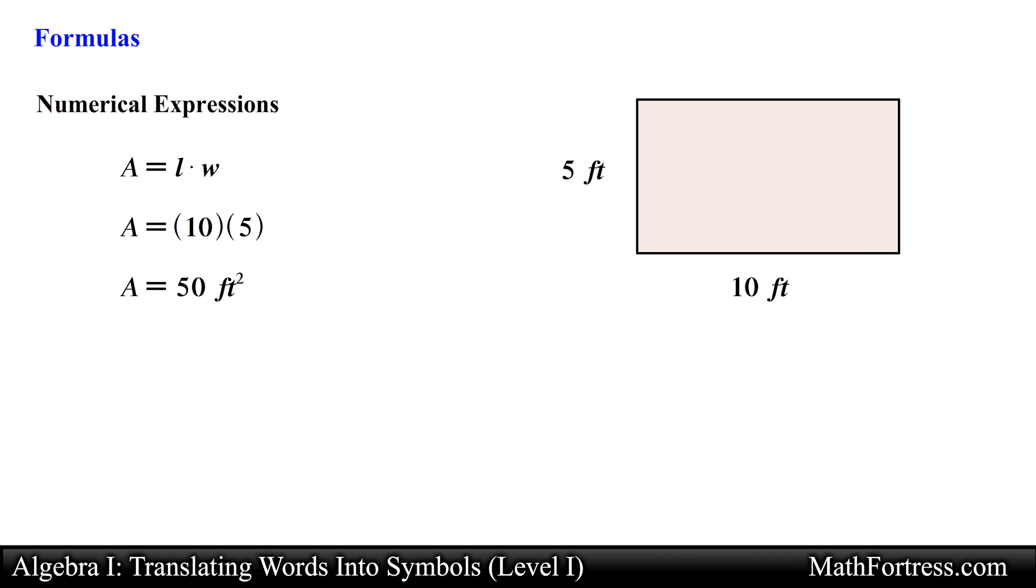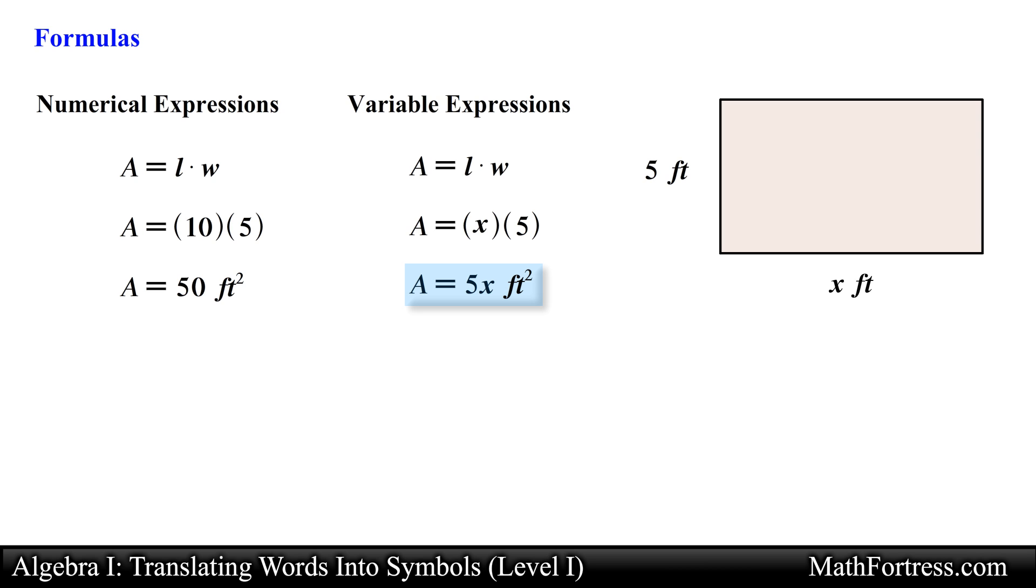The other types of answers that can be obtained from formulas are variable expressions. For example say we take the same problem the width is still 5 feet but now the length is equal to x. In this case we once again substitute each variable in the formula with the corresponding value that we are given. In this case the width is equal to 5 and the length is equal to x. So our final answer is 5x. This variable expression represents the area of the rectangle with the given measurements.